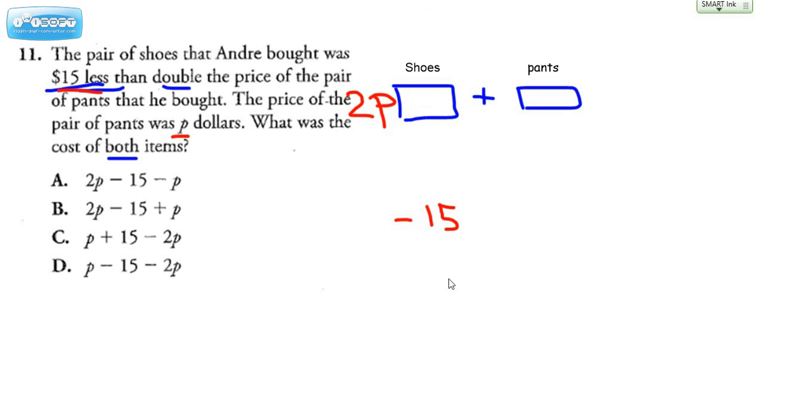Let's move it up here. Actually, this box is too small, so let's move that out of the way. That's the shoes. And the pants is going to be whatever they are, right, which is just going to be P. Now, let's look through the choices and see which letter choice matches that.